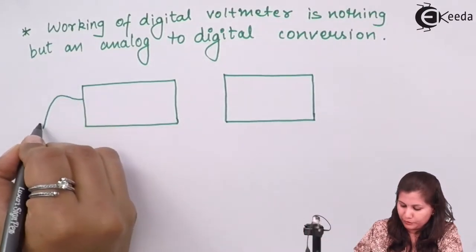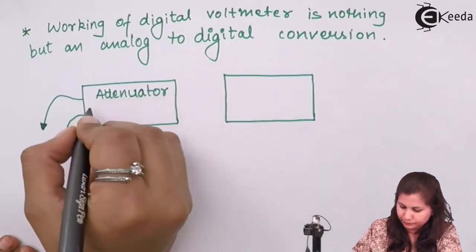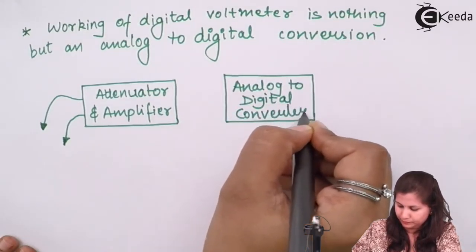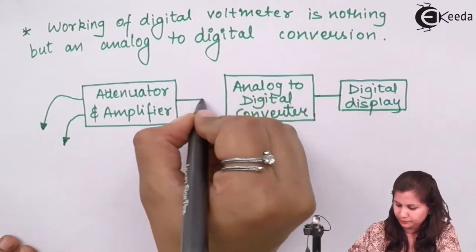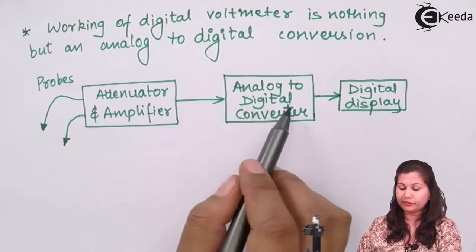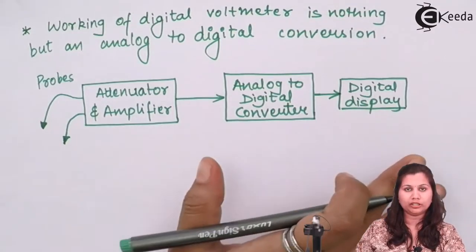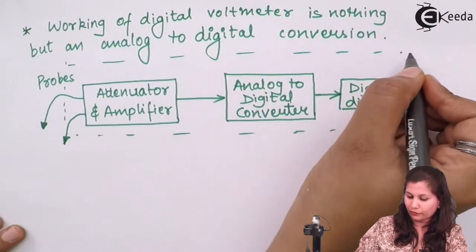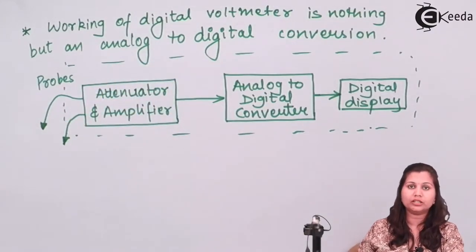In a simplified view, the digital voltmeter has probes, followed by an attenuator and amplifier. The signal is amplified, then converted into digital form by the analog-to-digital converter, and the digital display gives us the value of the input voltage. So the working of the digital voltmeter is, in short, an analog-to-digital conversion of the input signal.